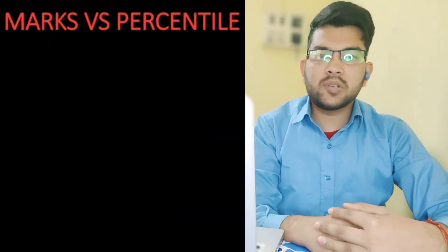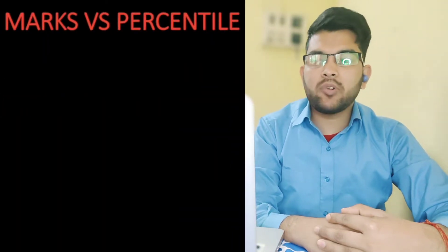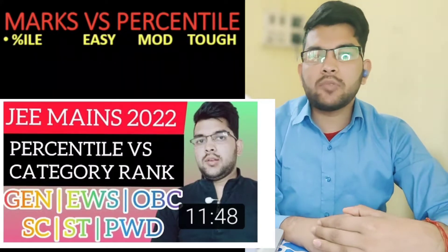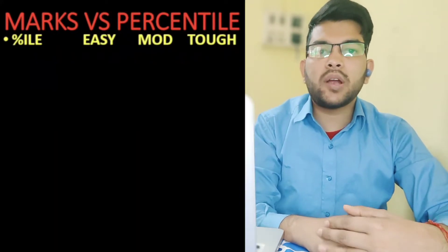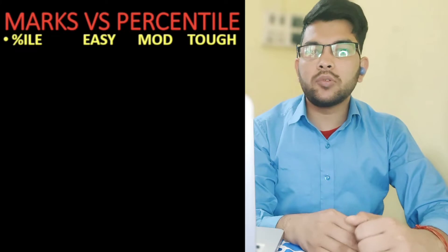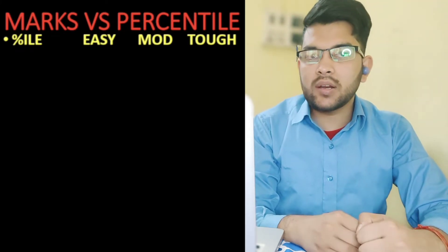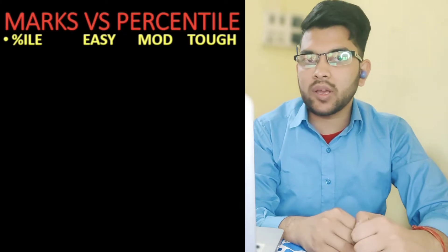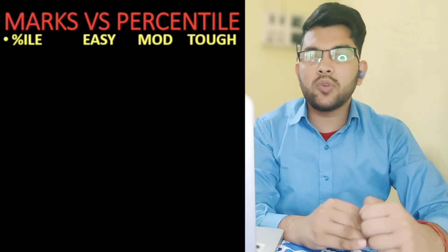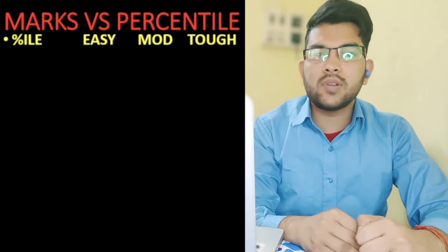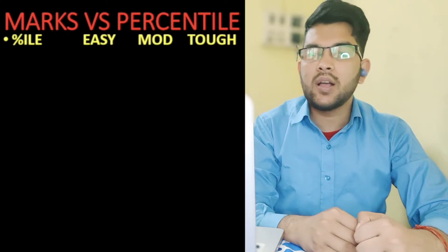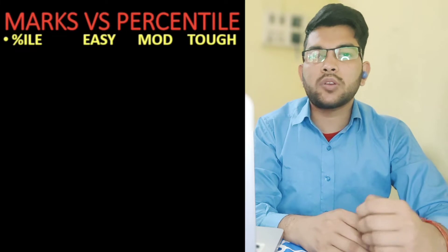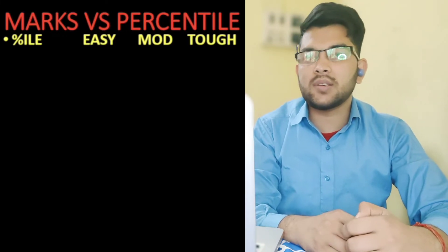Here is the marks versus percentile data for each type of paper — easy, moderate, and tough. I have already provided a separate video for percentile versus category rank, covering general rank, OBC rank, EWS rank, SC, and ST — all types of rank. You can check that video via the i-button or the description box link, so you can estimate which college you are going to get at a particular percentile this year.